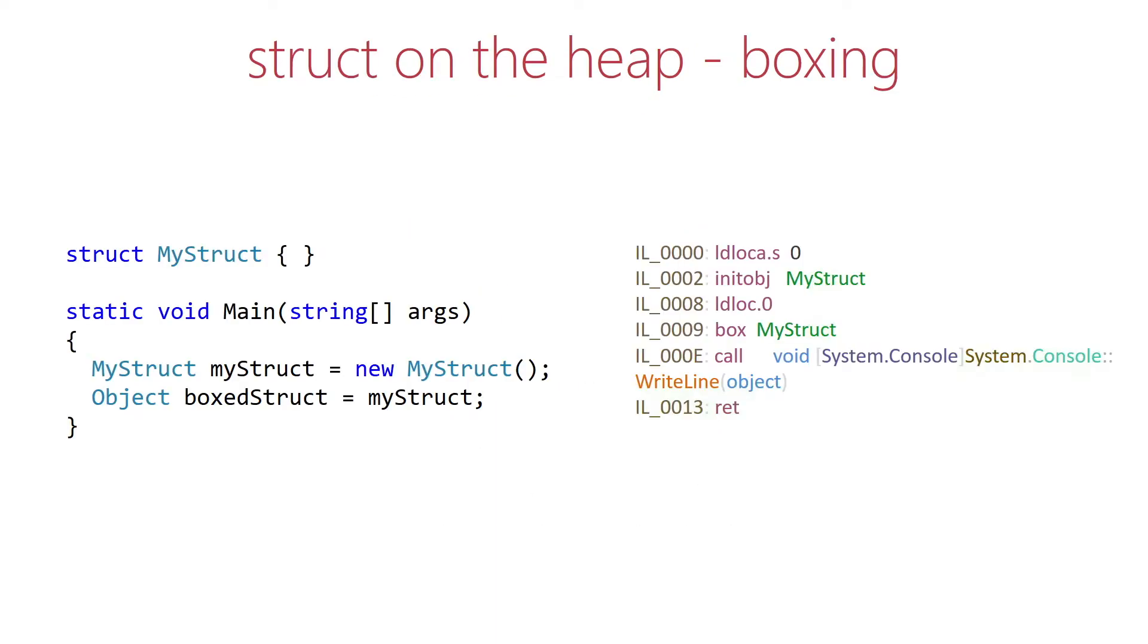A classic example is boxing. On the left side you see C# code that assigns a value type to object, and on the right side you see the corresponding IL code with the box instruction. Boxing basically puts a value type onto the heap.